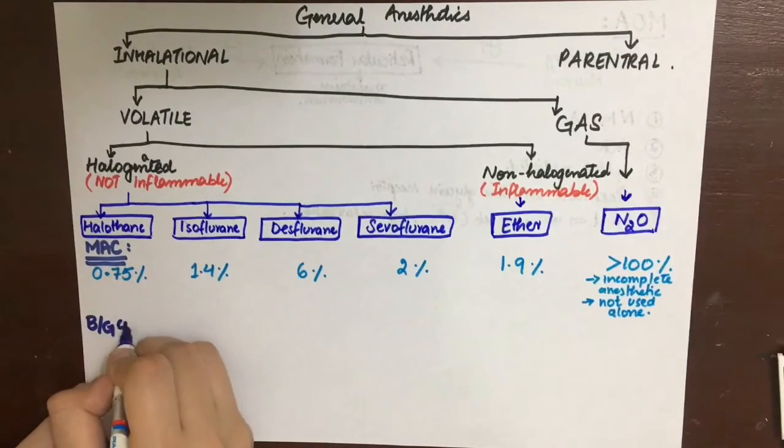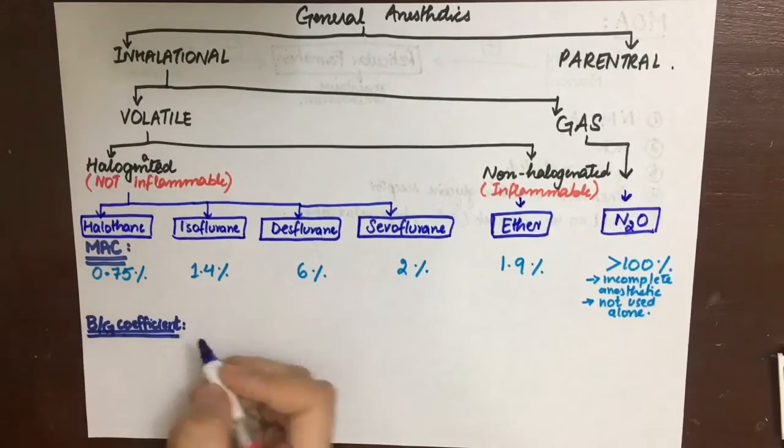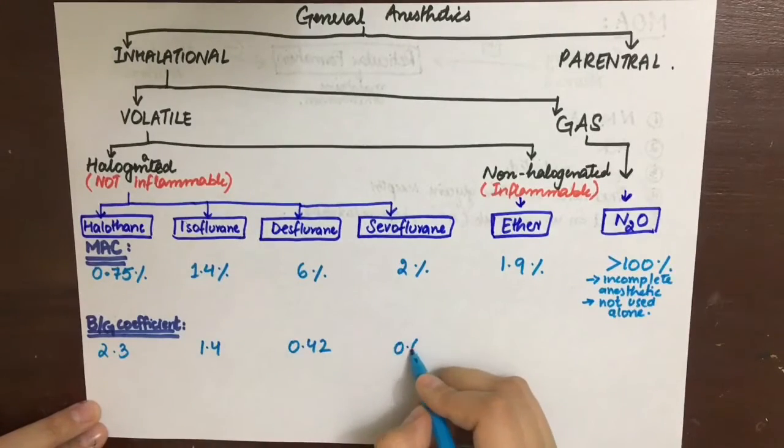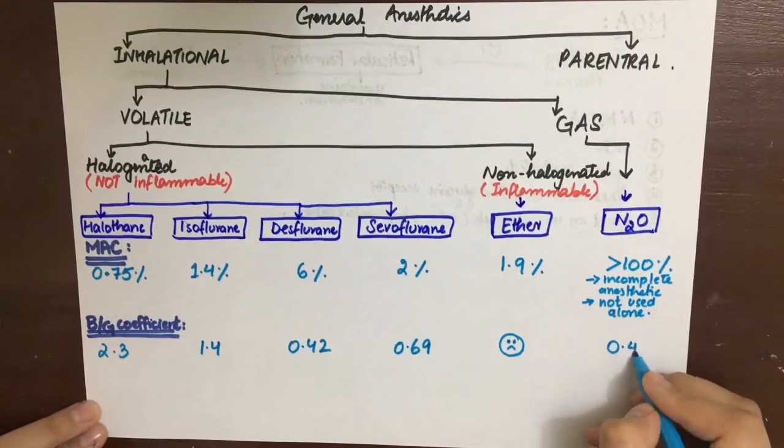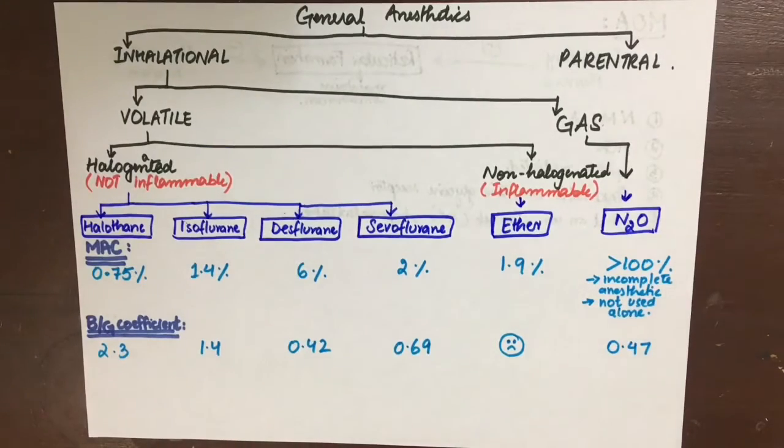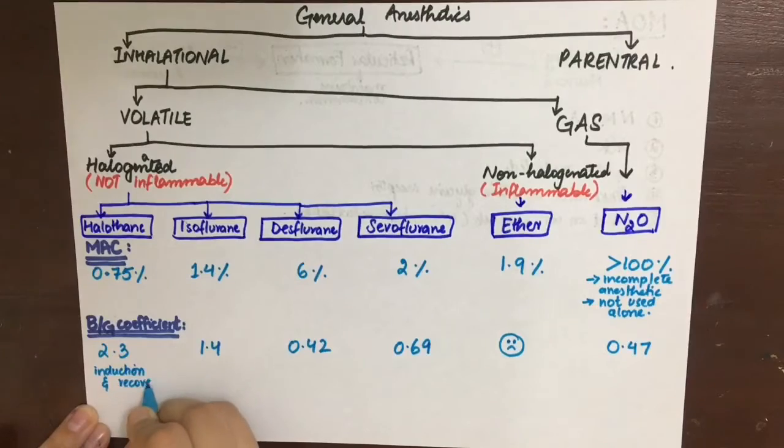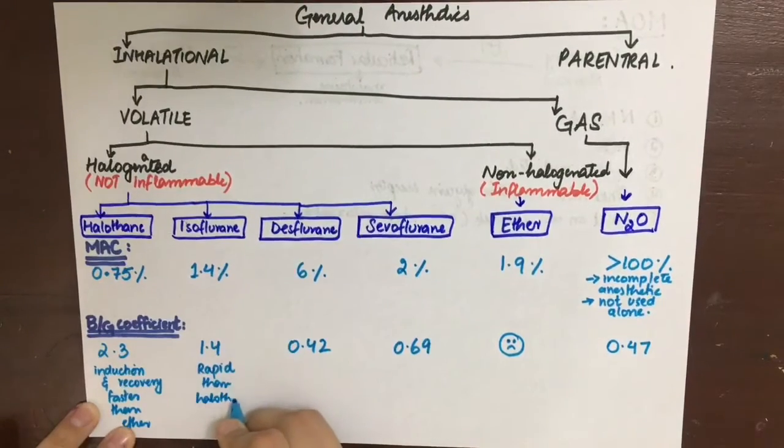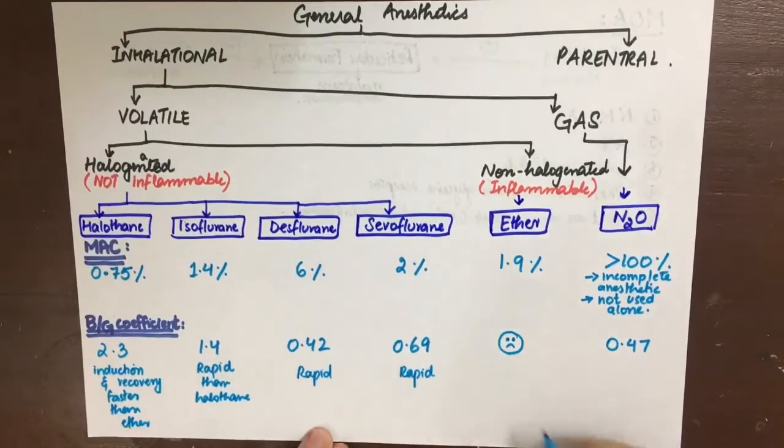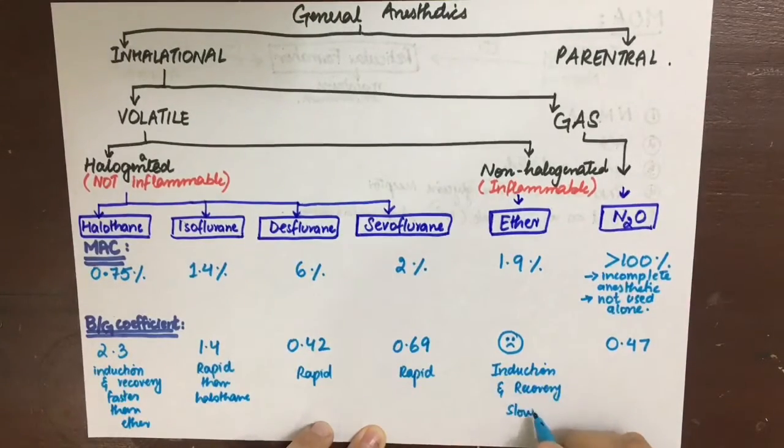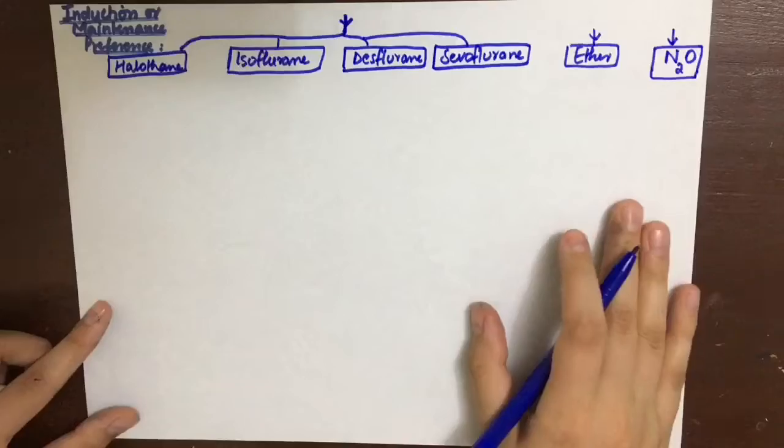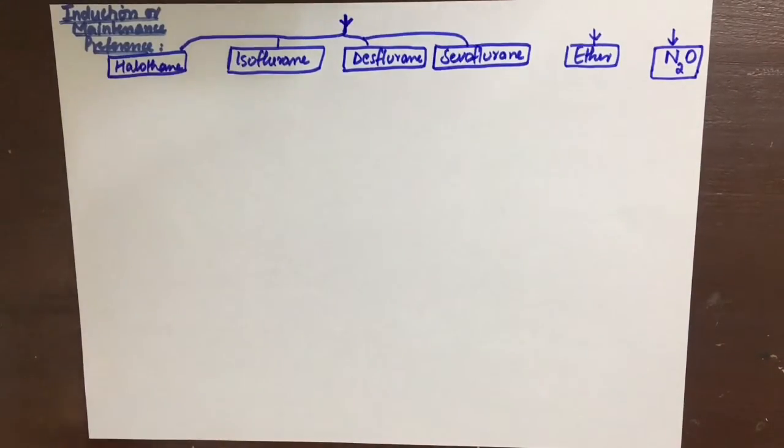The second property is the blood gas coefficient. I'll write the blood gas coefficients of all of these. We could not find the exact blood gas coefficient for ether, but we know that it is very slow in the induction and recovery. That means it has a large blood gas coefficient. We can see here that the largest blood gas coefficient is the second largest, of course, is that of halothane. So the induction and recovery is faster than ether. Next, isoflurane is rapid than halothane. Desflurane and sevoflurane are also rapid because of the low blood gas coefficient. And nitrous oxide is also rapid acting.